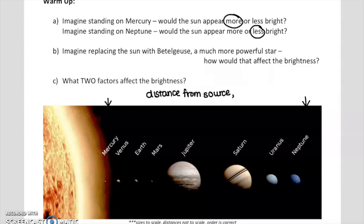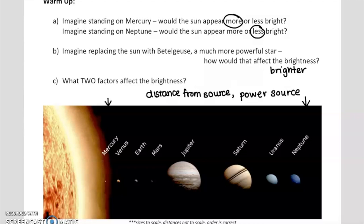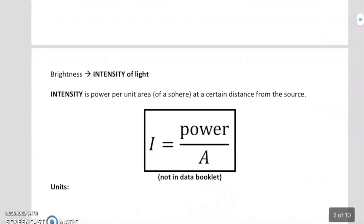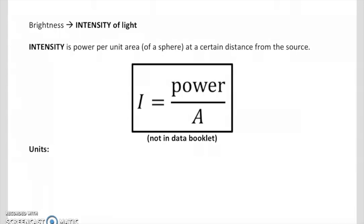In part B, if you imagine Betelgeuse being the replacement for the Sun — Betelgeuse is a much more powerful star — you could imagine that it would make the Sun brighter in all of our skies. So the power of the source itself is the other aspect that affects brightness. The technical term for brightness is really intensity.